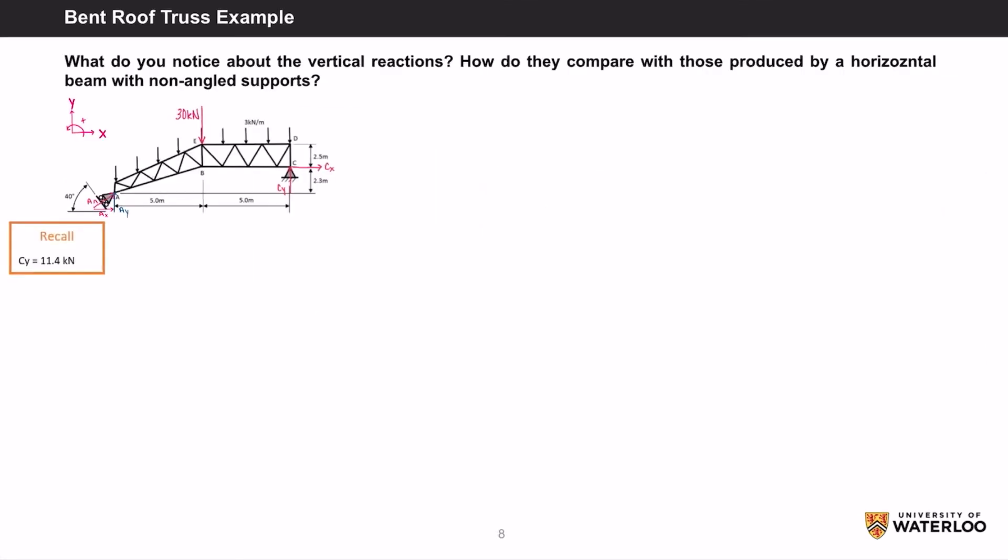What do you notice about the vertical reactions? How do they compare with those produced by a horizontal beam with non-angled supports? Currently, we only know CY as we never really found out where AY was.